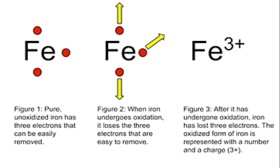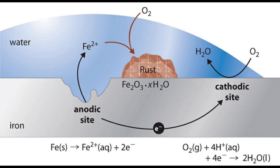Metals donate electrons and form metal cations in the presence of oxygen. Consider the diagram shown here — water is accumulated on top of the metal. In the first step, the metal ion loses an electron and gets converted to cations, that is ferrous ions, in the presence of atmospheric oxygen. This point where ion oxidation takes place can be considered as the anode, that is the negative terminal.